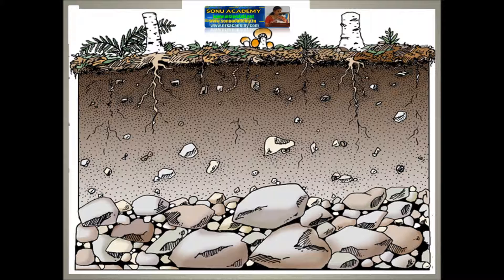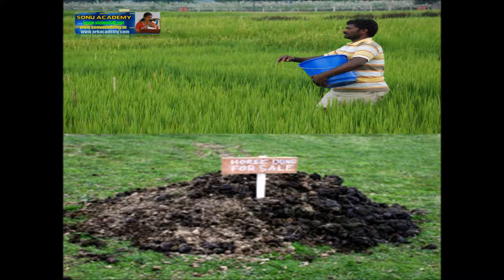Let us see the importance of soil. Plants grow well in soil — they take water, minerals, and salts from the soil. Thus, soil provides us with food. Different plants grow well in different types of soil. For example, rice grows well in clayey soil, whereas bajra grows well in sandy soil. Most plants grow well in loamy soil.